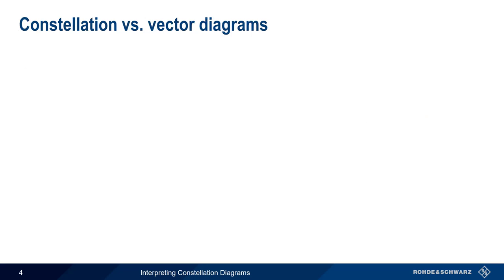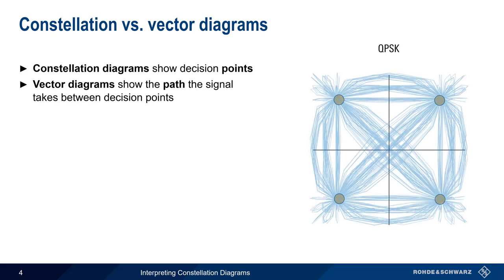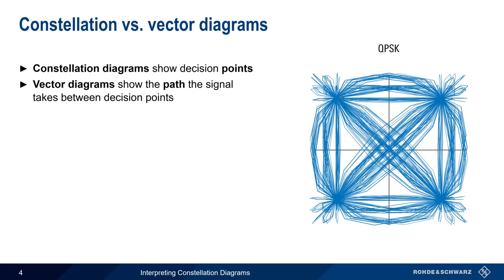A constellation diagram only shows the decision points at each sample time. Another way of representing vector modulated signals are vector diagrams, which show the path taken between the decision points. This means that vector diagrams are made up of lines rather than points. Vector diagrams are often very useful in differentiating between different modulation variants.